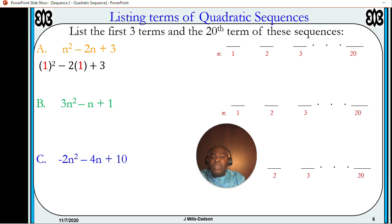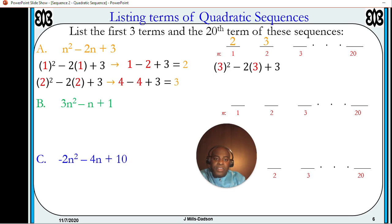Substituting 1, that will give us positive 2. Substituting 2, positive 3. Substituting 3, positive 6. Now we're going to substitute 20 this time. That is 263 for the first one.